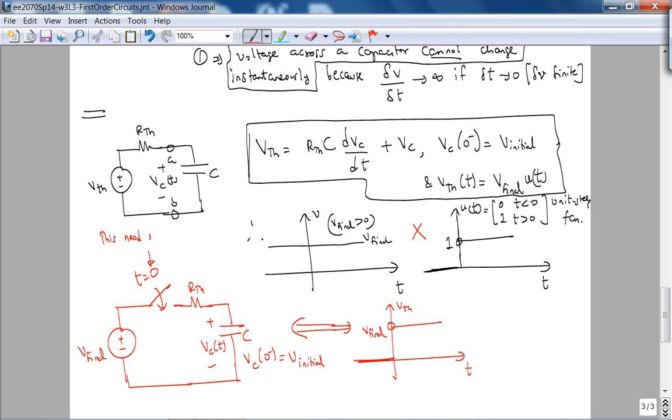Note that this need not be 0, in the sense, we could have, at T equals, I don't know, some T0, we could have VTH of T is some V final U of T minus T0. In this case, T0 is 0. But the bottom line is, this is the picture, that goes, if you want, this is the switch, this is the picture with the switch, that goes with the circuit. But the bottom line is, where we'll continue next time, is we'll solve this differential equation, and you'll notice, it has a very elegant form.